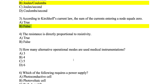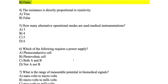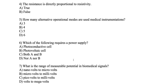Question number 4: the resistance is directly proportional to resistivity. That is true. Remember that R equals rho times L over the cross-sectional area. The resistivity is rho, so resistance equals rho multiplied by the length of the wire divided by the cross-sectional area of the wire. Remember that resistivity is a material property. So the answer for number 4 is true.